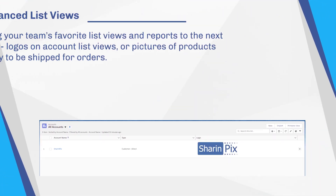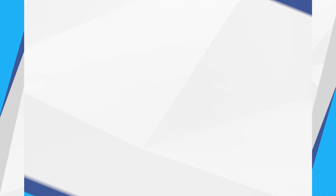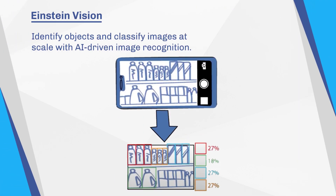It's worth pointing out that an image can bring your team's favourite list views and reports to the next level. For example, you could include the logo of accounts in an account list view, or pictures of physical products ready to be shipped for orders. There are ScreenFlow components that give you the ability to extend your SharingPix automation with Salesforce Flow. And tap into Einstein Vision with SharingPix to identify objects and classify images at scale with AI-driven image recognition.